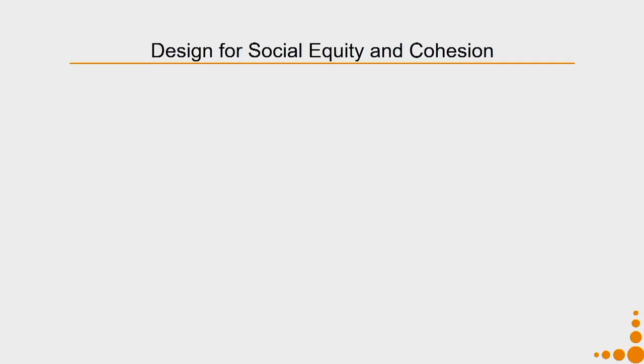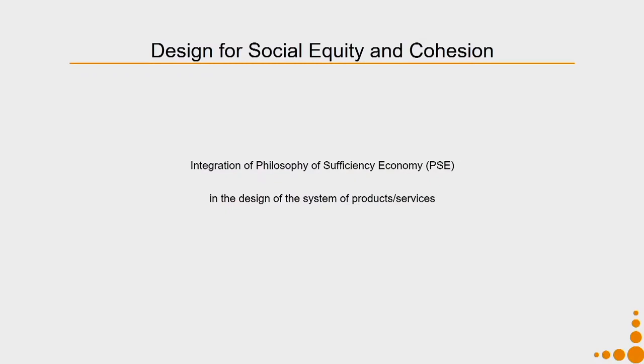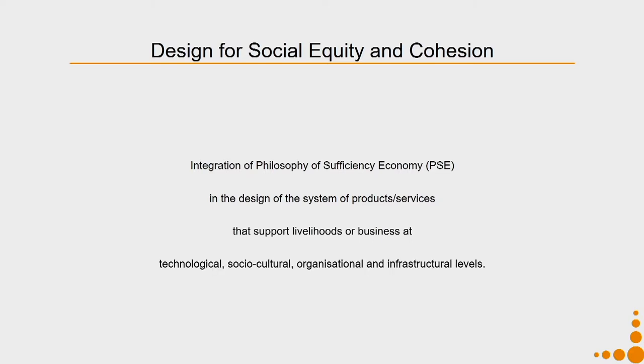This method can be put into the category of design for social equity and cohesion, because the main aim and starting point of this particular philosophical approach is that one should be able to achieve social equity and cohesion and thereby sustainability through that means. The integration of the philosophy of sufficiency economy in the design of systems, products, or services that support livelihoods or businesses at technological, sociocultural, organizational, and infrastructure levels.